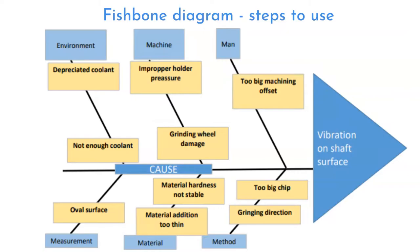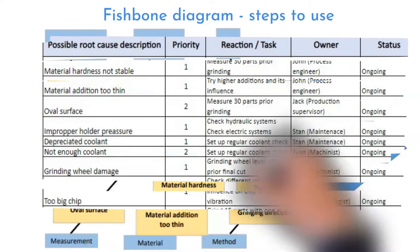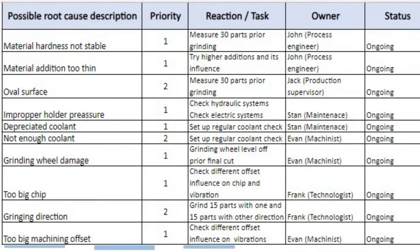And this is result of the brainstorming. There are 10 potential root causes. Team described what would be reaction on each cause. Task owners also had their priorities to work on. So they knew what to focus on.